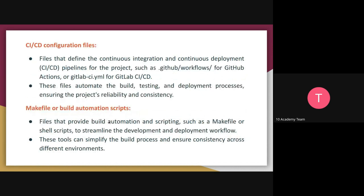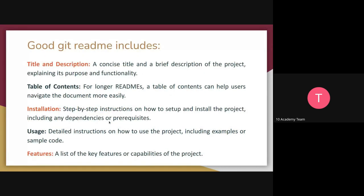The CI/CD configuration is an important thing to include in your repository. It provides continuous integration and continuous deployment, automatically automating the build and deployment process of your application from beginning to end. There are also tools like Makefile and Docker, which are part of the DevOps section, that help provide build automation and scripting, simplifying the build process and ensuring consistency across different environments.